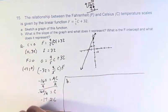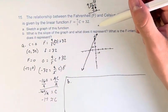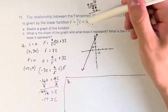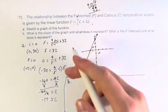Part B: What is the slope of the graph, and what does it represent? Well, the slope, since this is in slope-intercept form, is the coefficient on C, so 9/5.